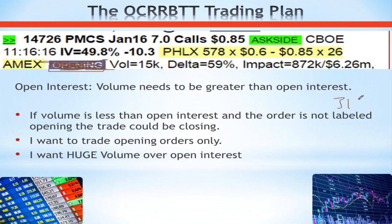Open Interest needs to be smaller than volume for me to determine it is an opening trade. The Open Interest in PMCS was 318 contracts when this order came across the tape. With 318 contracts in Open Interest, is it at all possible that 14,726 contracts constitutes a closing order? Absolutely not — there isn't enough for them to close. If I can flag volume as being greater than Open Interest, then I know for a fact it is an opening position. If I can't determine with 100% certainty that a position is opening, I cannot take the trade. That rules out a whole bunch of signals right off the bat.